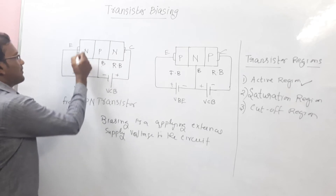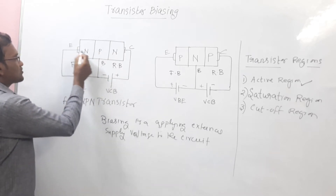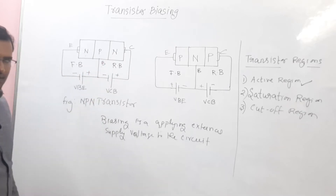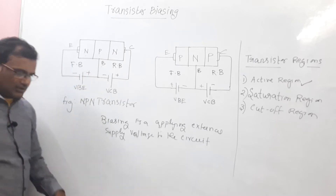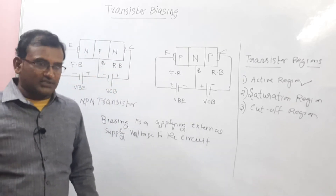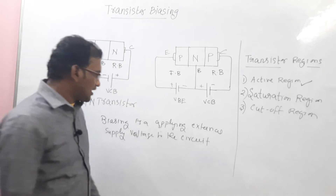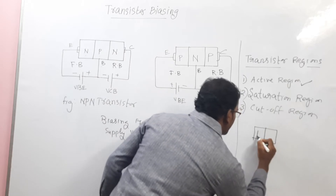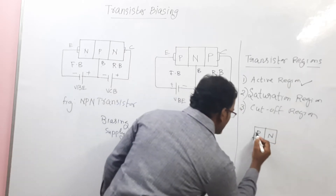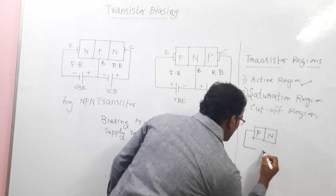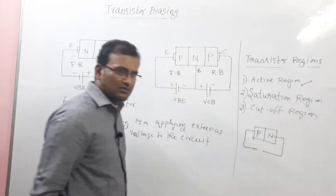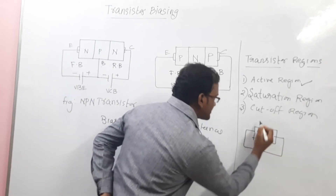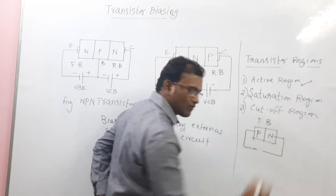Here, N region in emitter, N in base P. So N is going to connect to the negative terminal and P is going to connect to the positive terminal. Then it is called as forward bias. Do you remember the operation of forward bias condition in PN junction diode? Let me draw here so you can understand. This is P type, N type, and this is going to connect to the supply voltage. That is a forward bias condition of a PN junction diode.